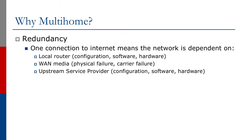Redundancy is one of the important features. One connection to the internet means the network is dependent on the local router — whether that's the configuration, the software, or the hardware. Configuration is influenced by the operators of the network: who changed something, did they change something, what was changed? What about the software? Software is not 100% reliable, never perfect, never fails without issue. A software outage or problem caused by software on the local router means an outage for the local network.